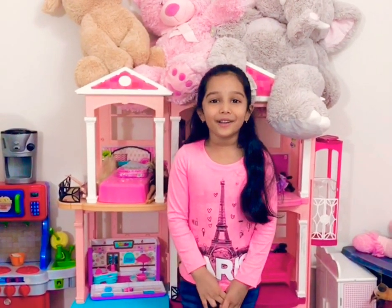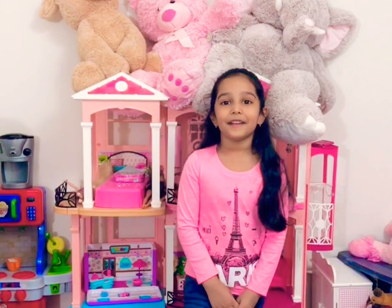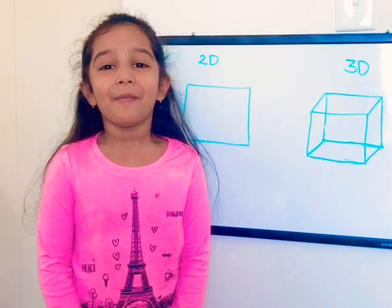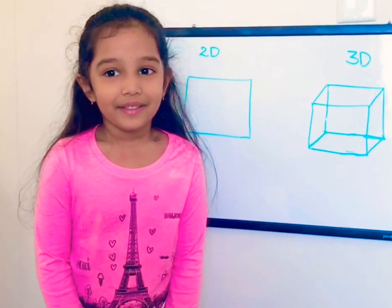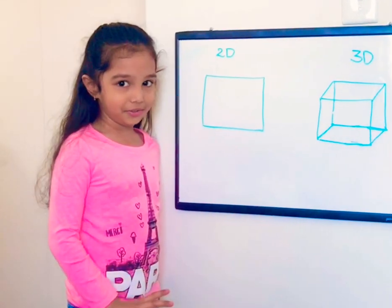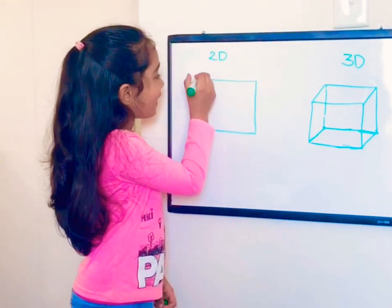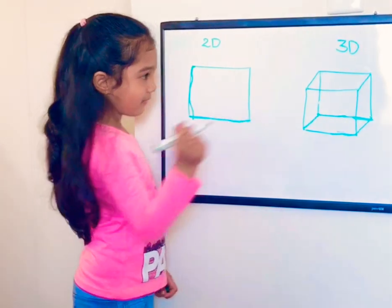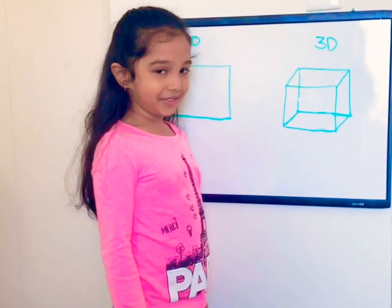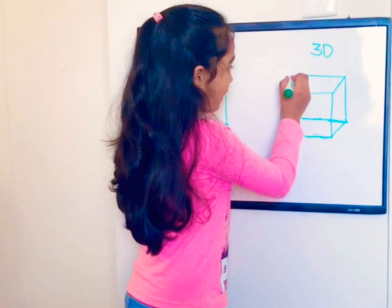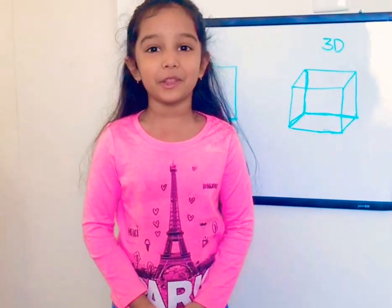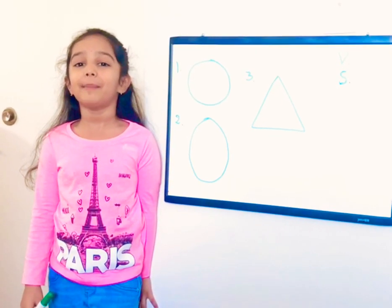Hello friends, I hope you're doing great. Today I'm going to talk about 2D shapes and 3D shapes. A 2D shape is flattened and has two dimensions: height and length. A 3D shape is not flattened and has three dimensions: height, length, and breadth. That's why we call them 2D shapes and 3D shapes.